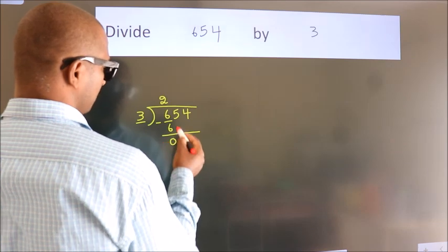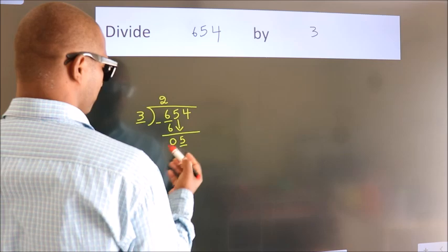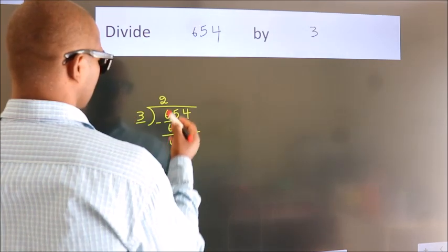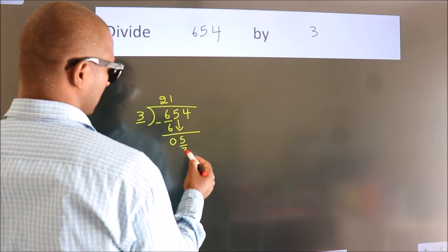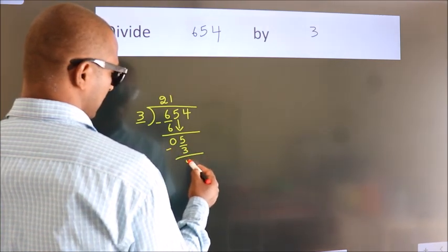After this, bring down the beside number. So, 5 down. A number close to 5 in the 3 table is 3 times 1, which is 3. Now we subtract and get 2.